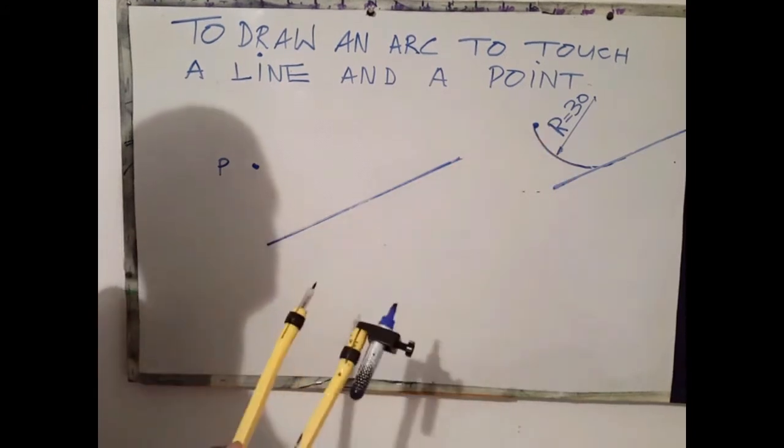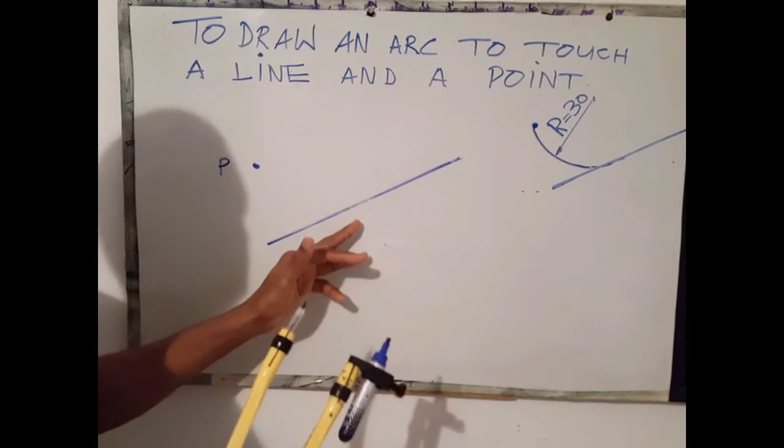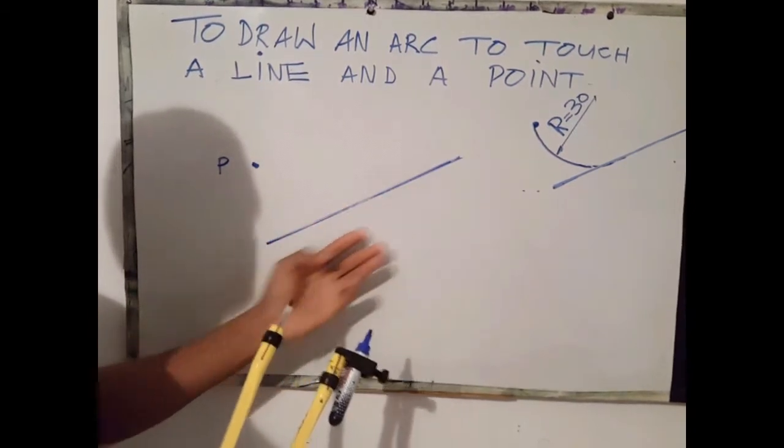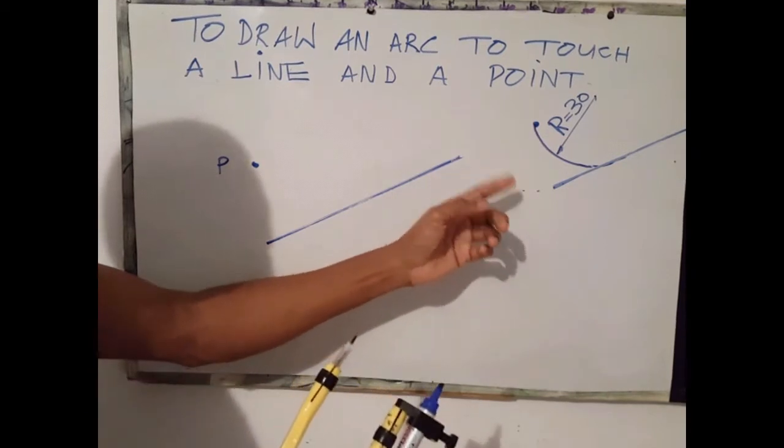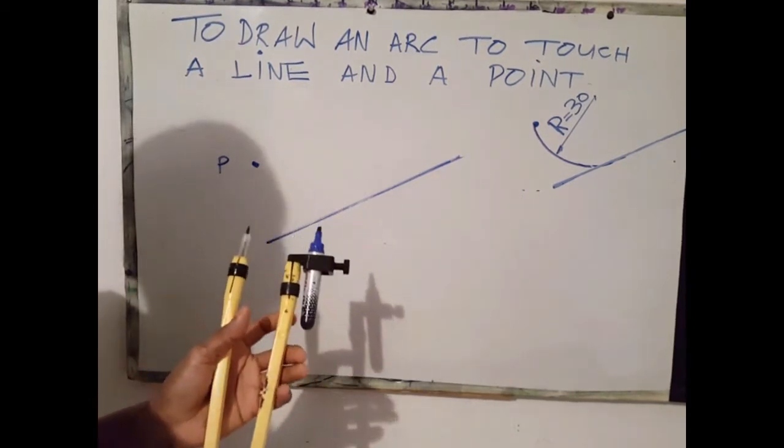It's important to know that once an arc blends or touches a line, you always draw a line parallel to that given line at the radius of the arc. In this case the radius is 30 millimeters.